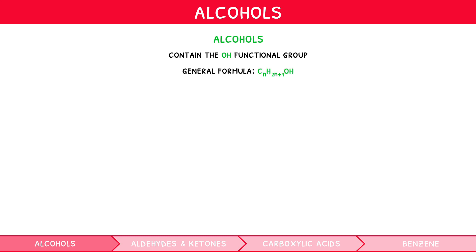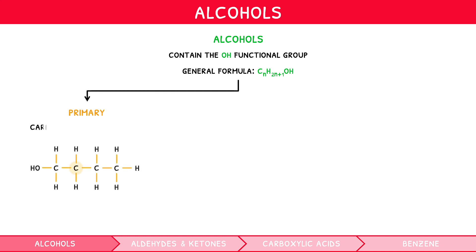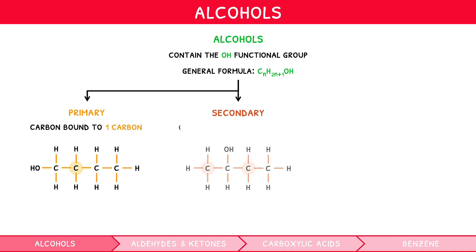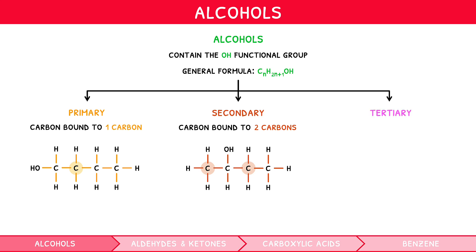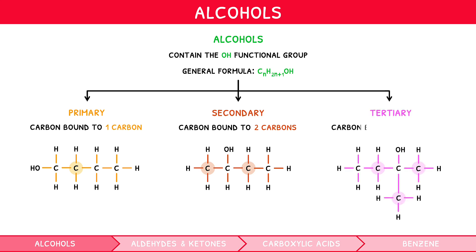Just like haloalkanes, they can be primary — where the carbon to which the hydroxyl group is bound is bound to one other carbon — secondary, where it is bound to two other carbons, or tertiary, where it is bound to three other carbons.